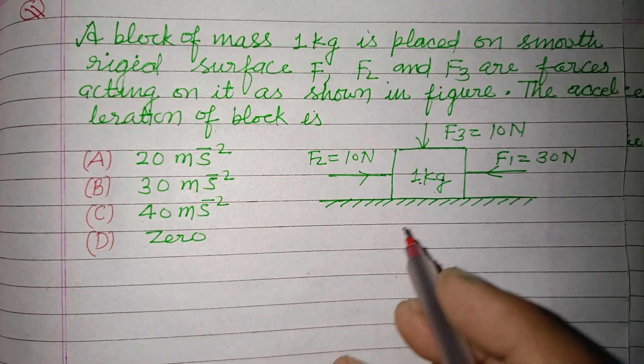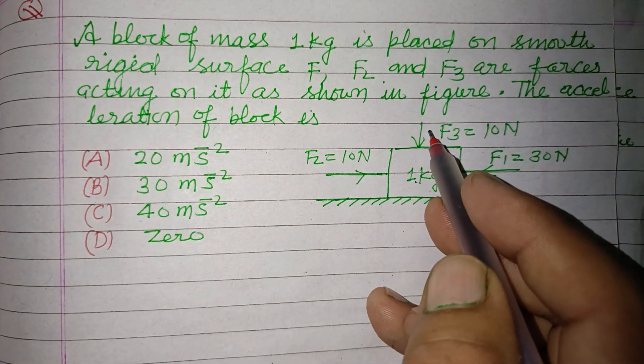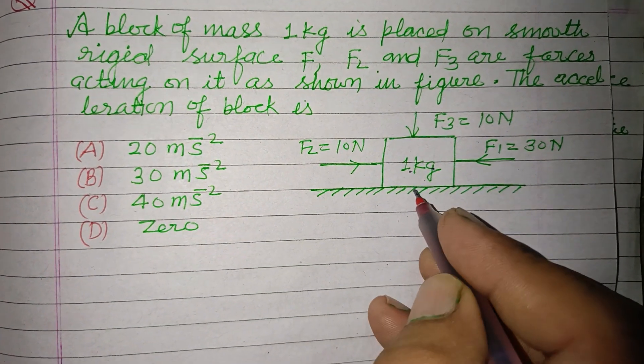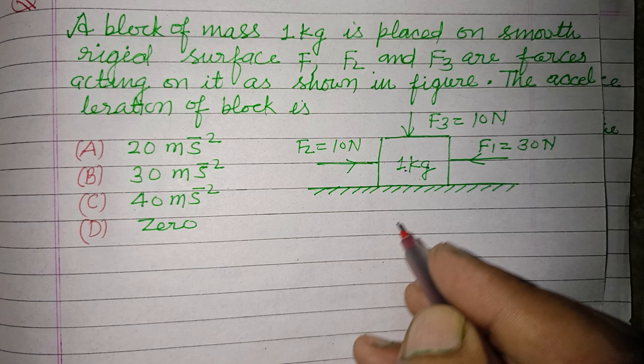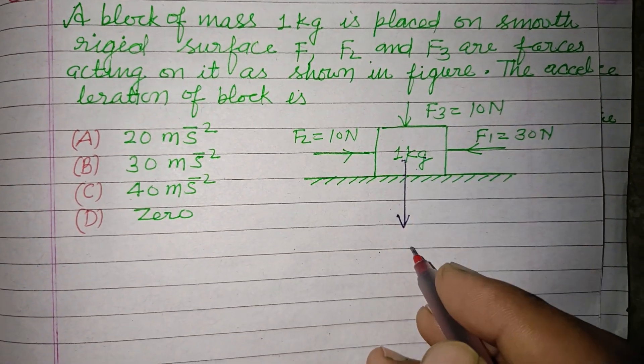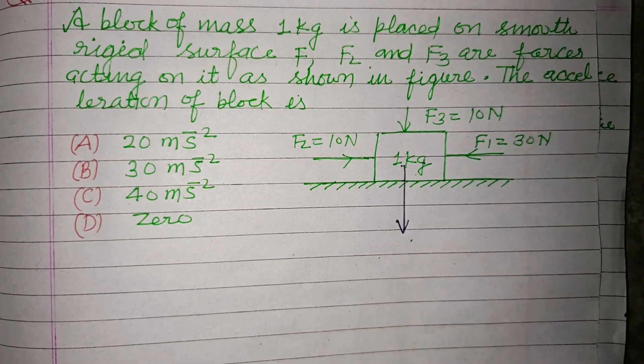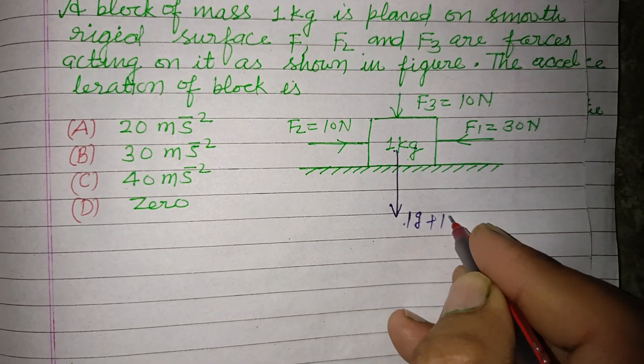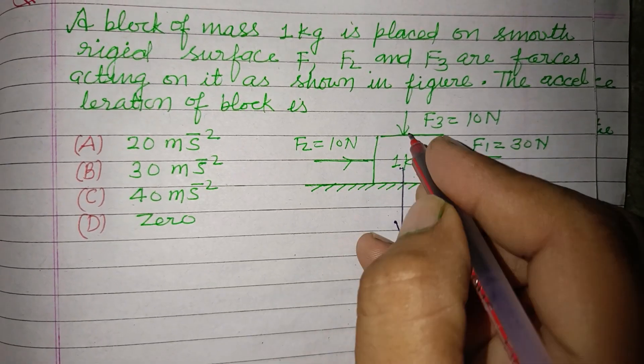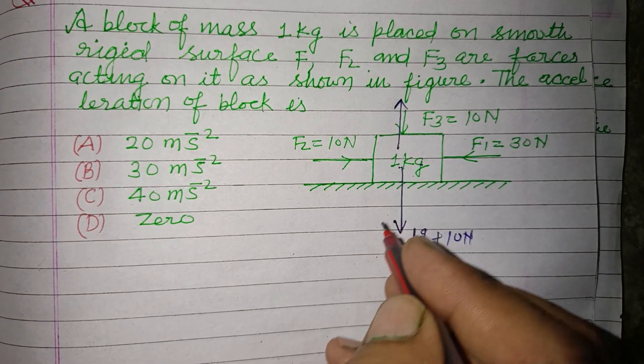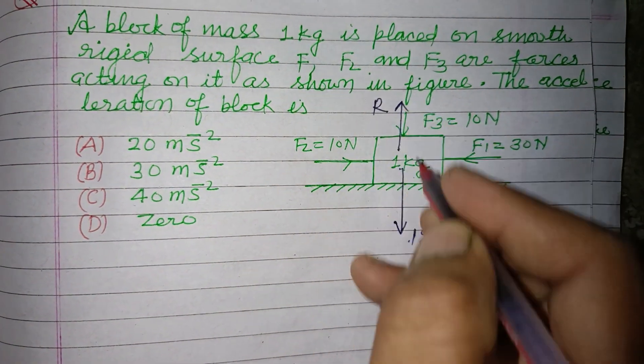So students, here is 1 kilogram mass. A force of 10 Newton is pressing this towards the surface. So total force working in downward direction is 1g plus 10 Newton, and the reaction of this surface is R, which balances this downward force.